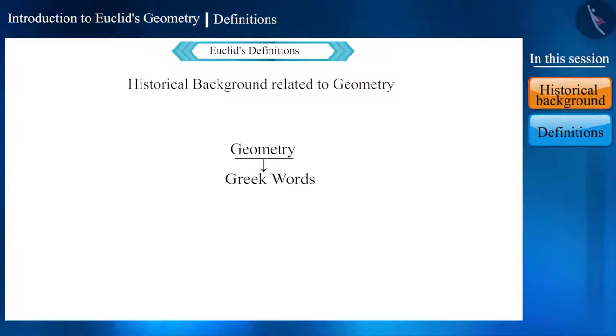Let's begin with some historical background related to the origin of geometry. The word geometry originated from the two Greek words, geo and metrein.